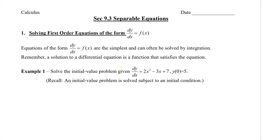Let's take a look at an example. Solve the initial value problem given that dy/dx is equal to 2x squared minus 3x plus 7, where y of 0 is equal to 5. Remember, an initial value problem is solved subject to an initial condition, which we have given here as y of 0 equals 5.